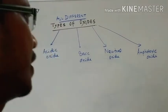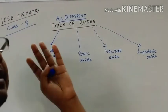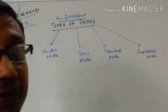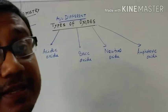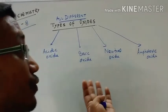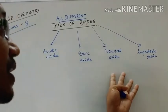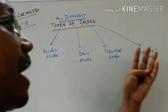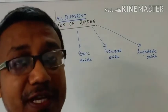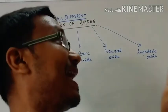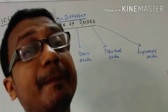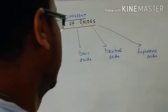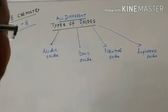Acidic oxides are the oxides which produce acids. Basic oxides are the oxides that mainly produce bases. Neutral oxides are those which don't react with any acid or base. Amphoteric oxides are those which react with acids as well as with bases. Now I'm giving you some examples.